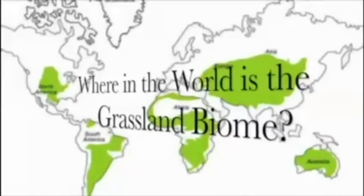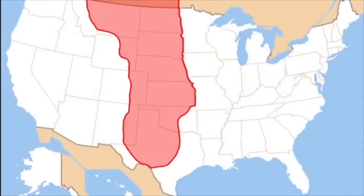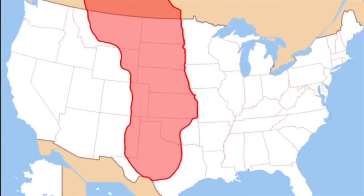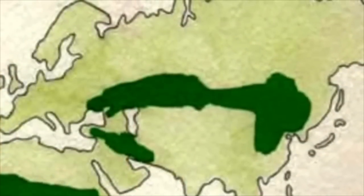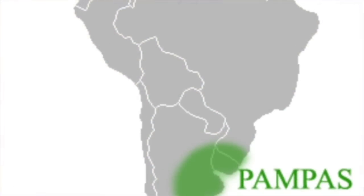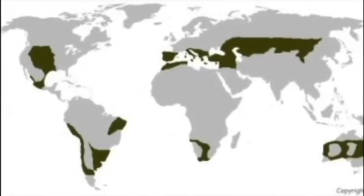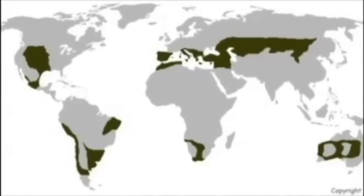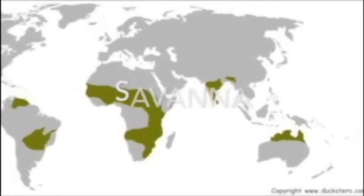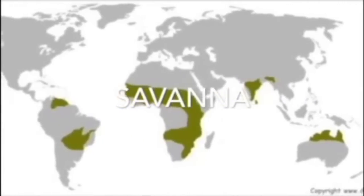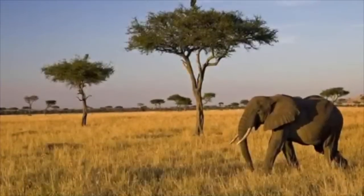Where is the grassland biome located? The grassland biome is in nearly every continent. Some major grasslands are in the Great Plains in the Midwest, between Ukraine and Russia, and in Argentina and Uruguay. These are called the temperate grasslands. Temperate grasslands have moderate rainfall and cooler winters and warmer summers than the savannas that are mainly in Africa.